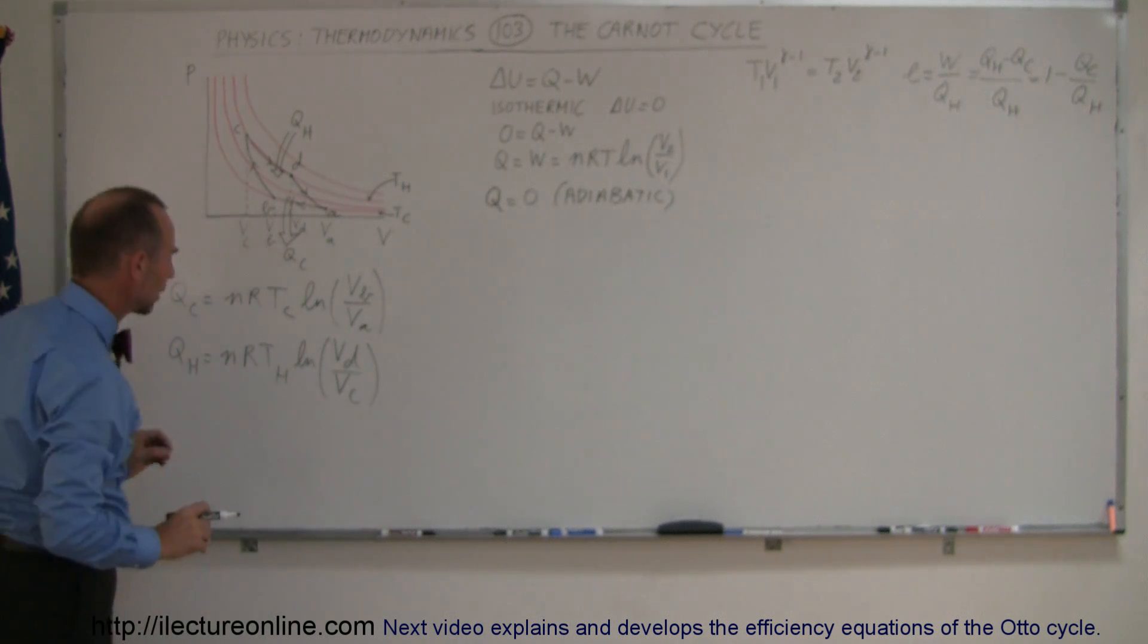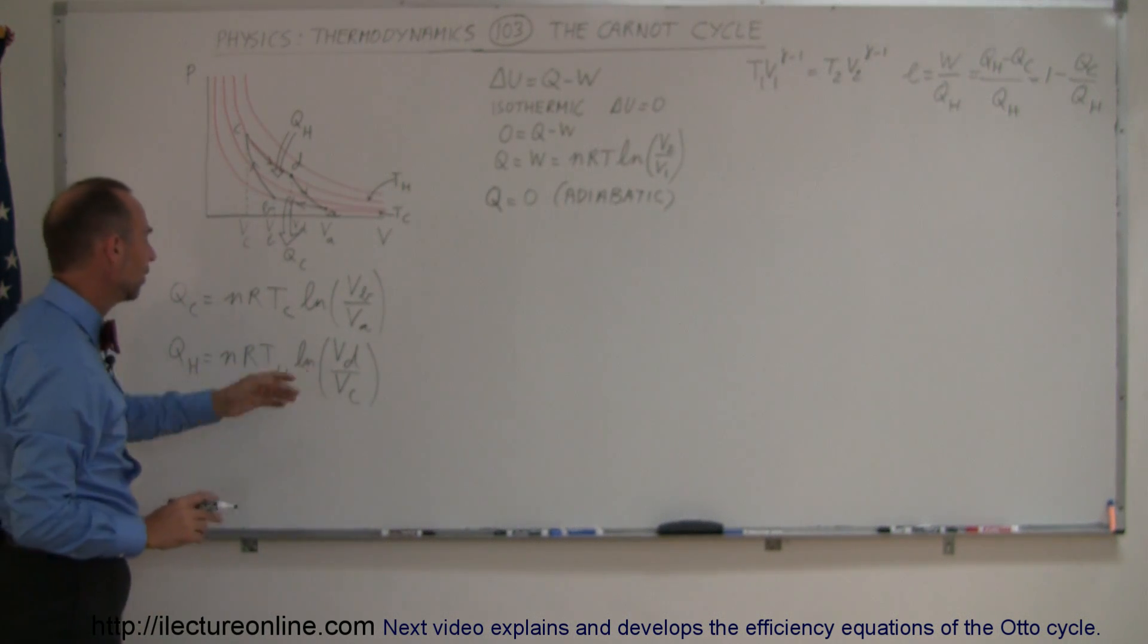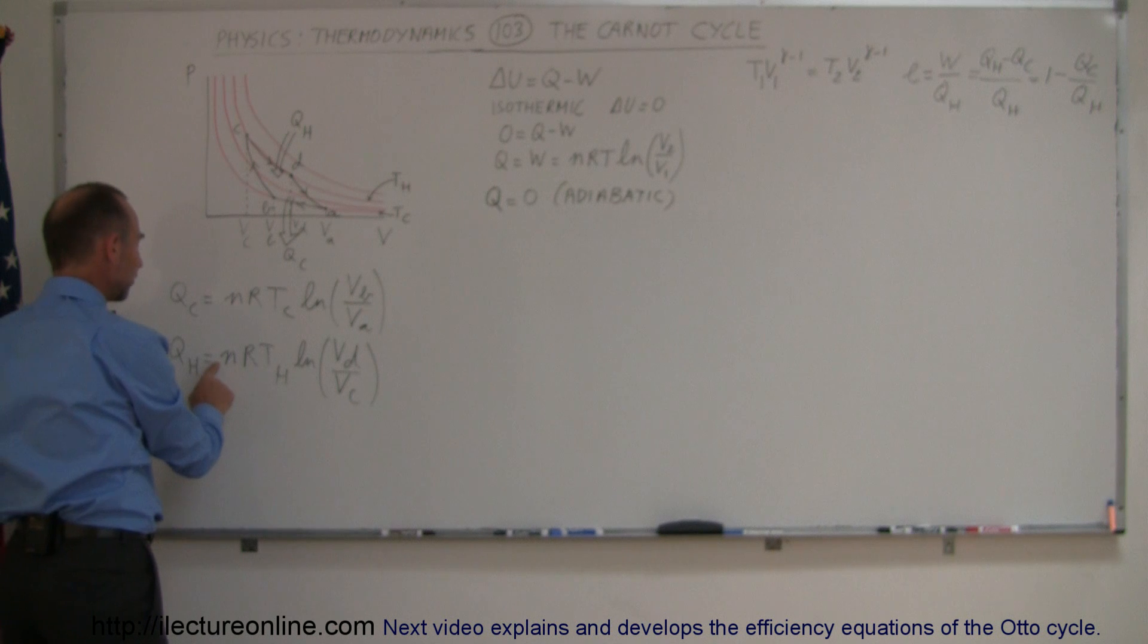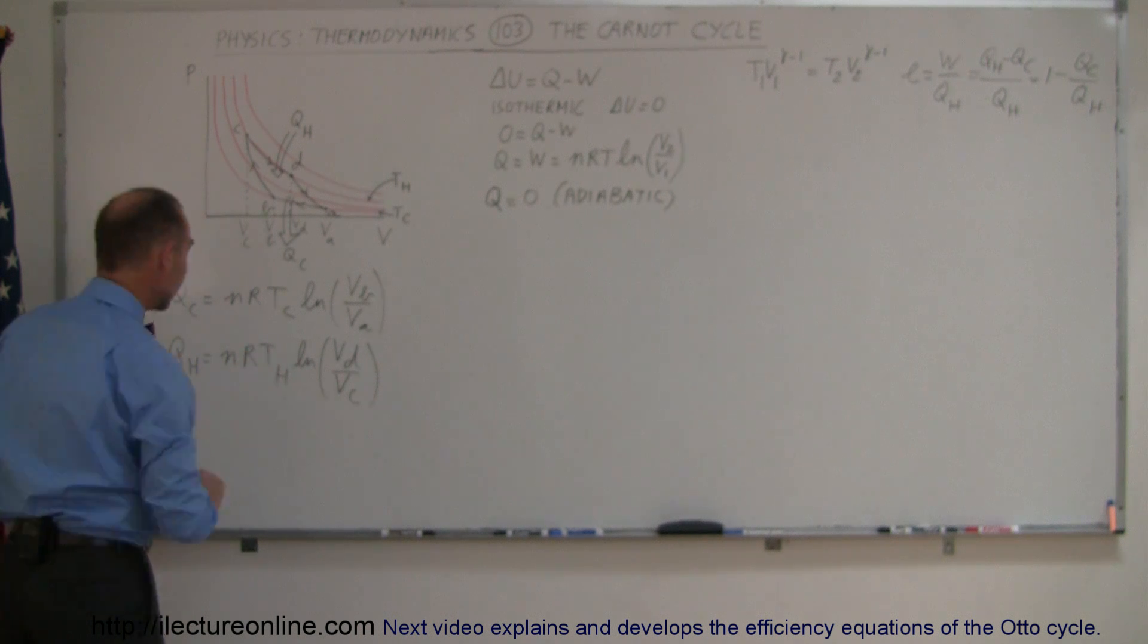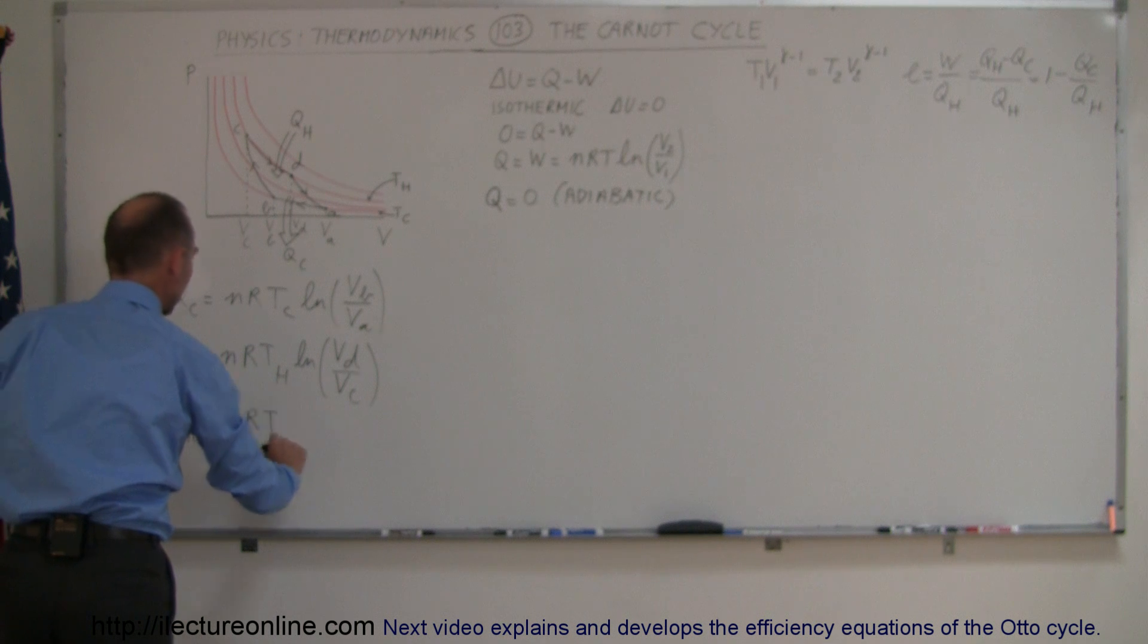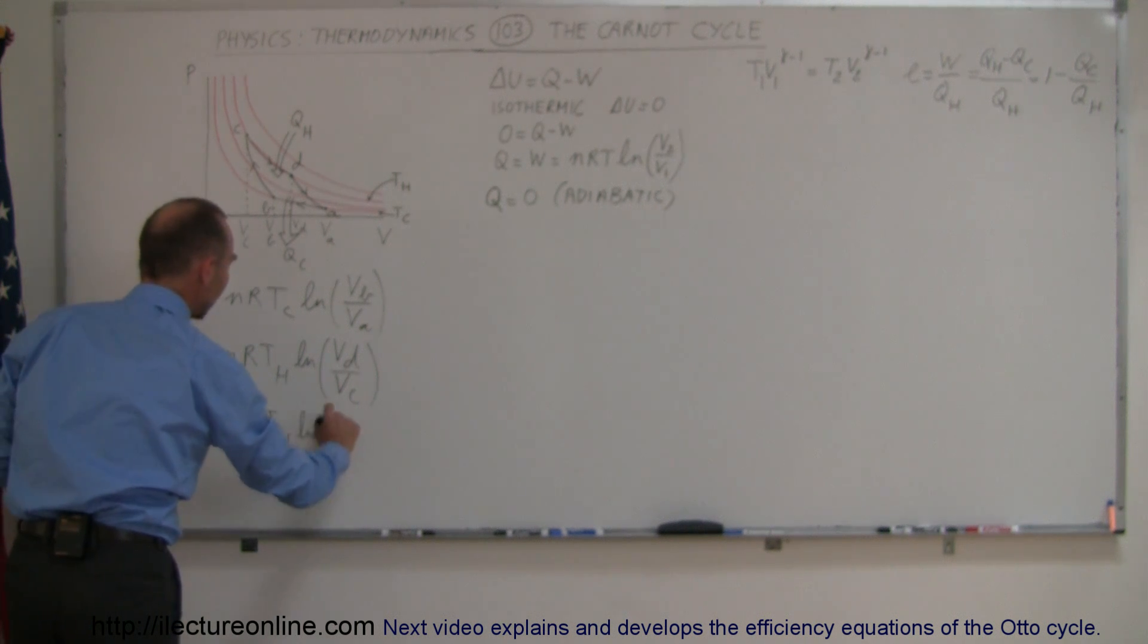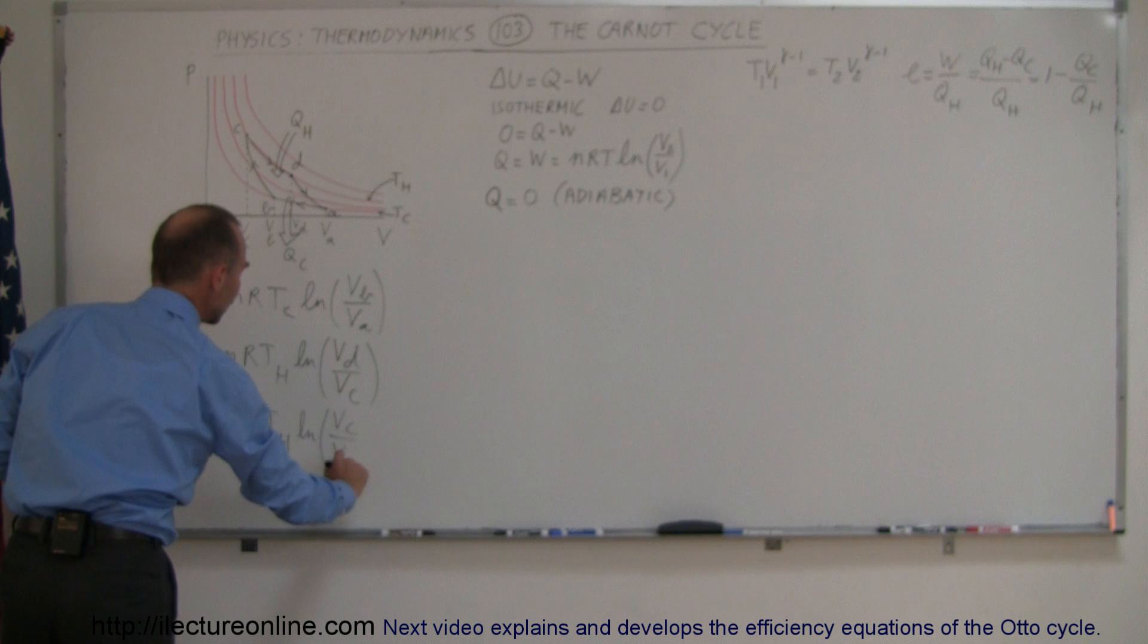Now, there's a mathematical trick here: we're going to take the negative of this. If I put a negative sign in front of that, and I exchange V_C and V_D, then that makes that negative as well, and they cancel each other out. So I can write Q_H is equal to the negative of nRT_H times the natural log of V_C over V_D.